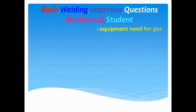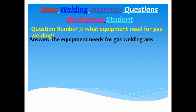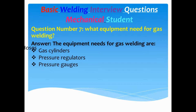Question number seven: What equipment is needed for gas welding? Answer: The equipment needed for gas welding are gas cylinders, pressure regulators, pressure gauges, hoses, and welding torch.